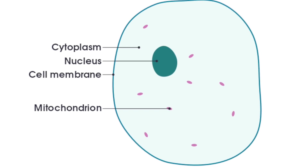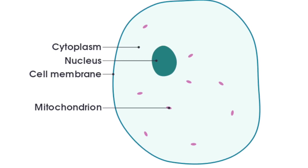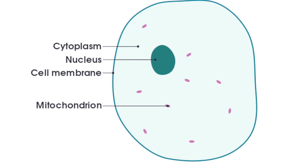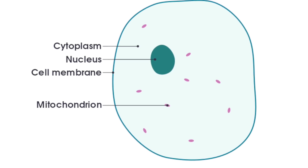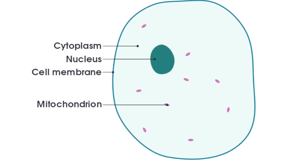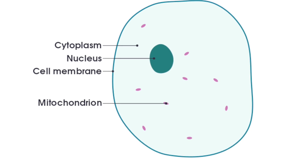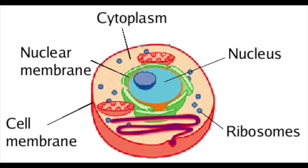Then we have the mitochondria. The mitochondria are structures in the cytoplasm — the liquid gel where all the chemical reactions take place — and this is where respiration takes place. And finally we have the ribosomes, and the ribosomes are where protein synthesis takes place.